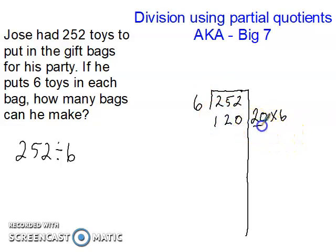So I'm going to take my 20 and write it up here. 20, it's part of my quotient. The 6 is my divisor right here, and now I'm just going to have to subtract. So that is 120 toys that made 20 gift bags. 2 minus 0 is 2, 5 minus 2 is 3, and 2 minus 1 is 1. Now I have 132 toys.